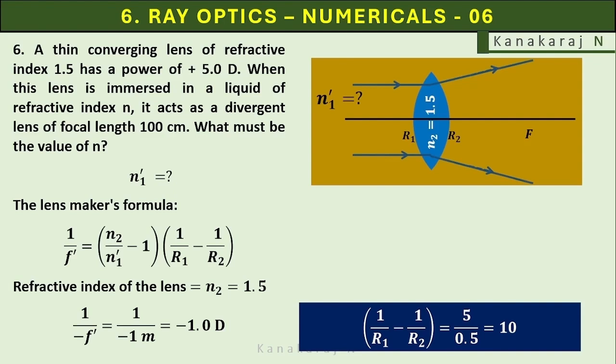Let us find what is the value of n1 prime. Minus 1.0 equals 1.5 upon n1 prime that has to be found out minus 1 multiplies 1 by r1 minus 1 by r2. In the place of 1 by r1 minus 1 by r2, we substituted 10.